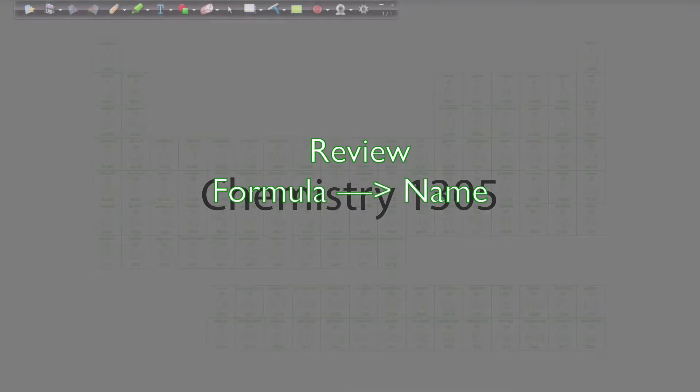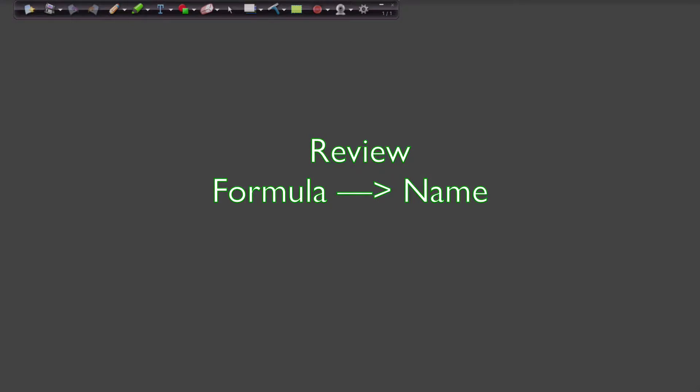Okay, let's review how to name a compound from a given formula. To do that, let's use a few examples. Let me start off with the first one here, and let's take this formula Cu3(PO4)2.